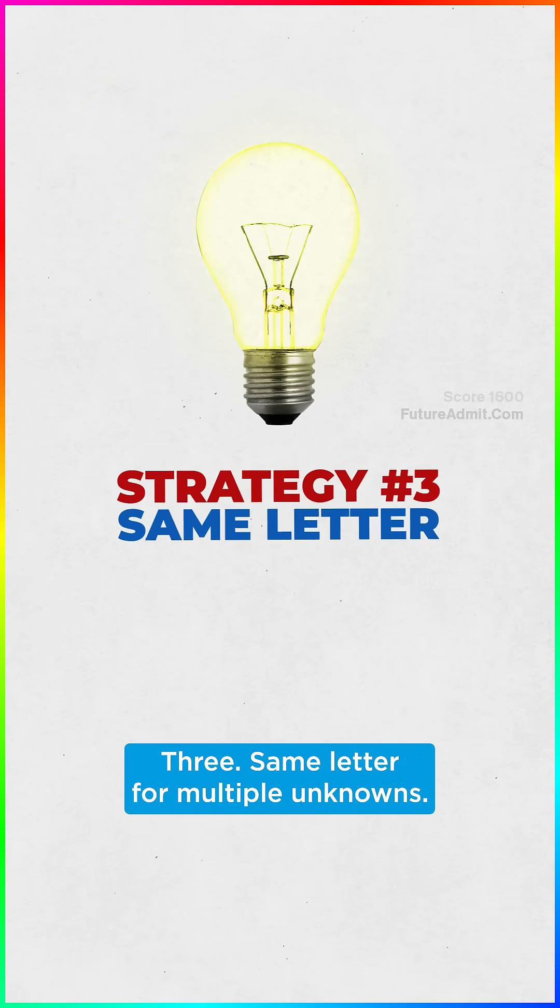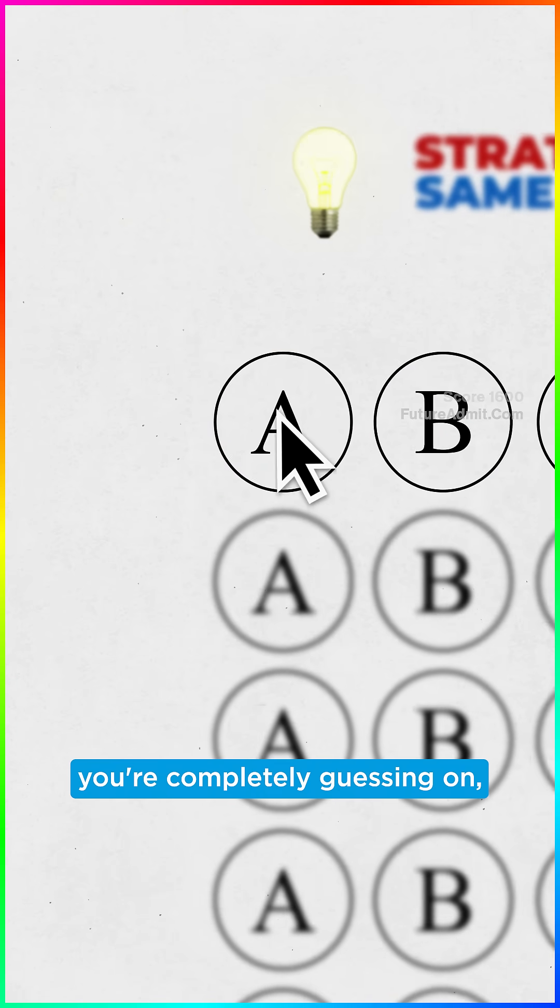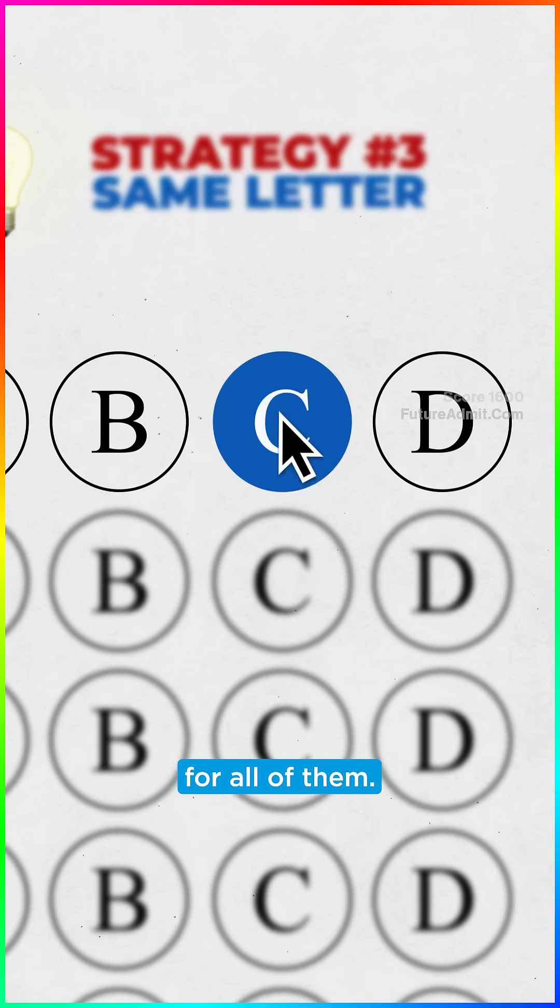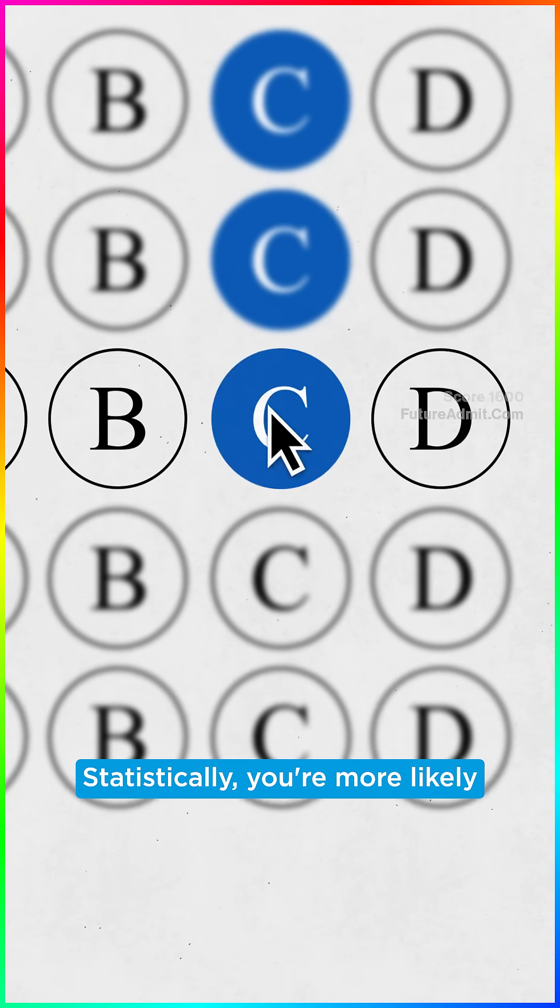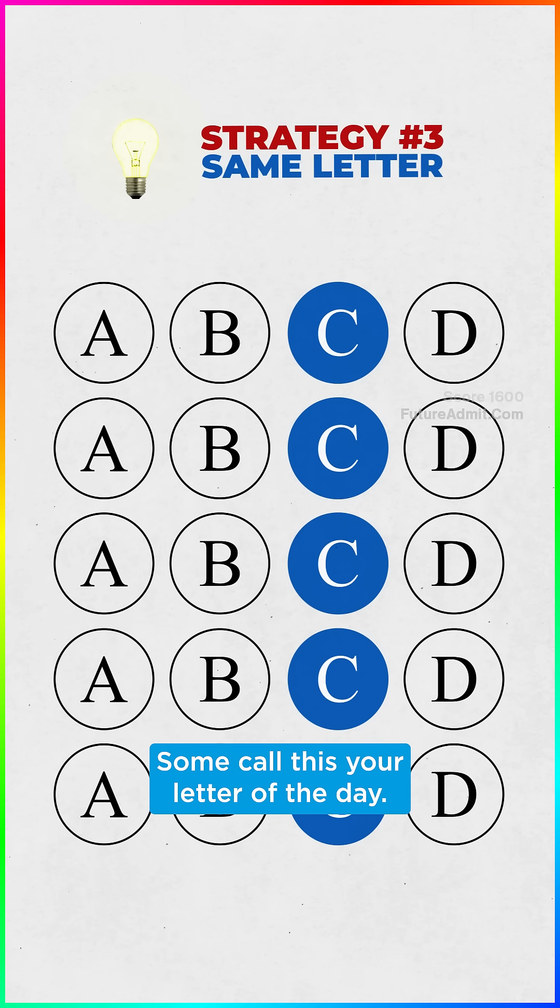Strategy 3: Same letter for multiple unknowns. If you have a batch of multiple questions you're completely guessing on, pick the same letter for all of them. Statistically, you're more likely to get at least one right than if you spread your guesses randomly. Some call this your letter of the day.